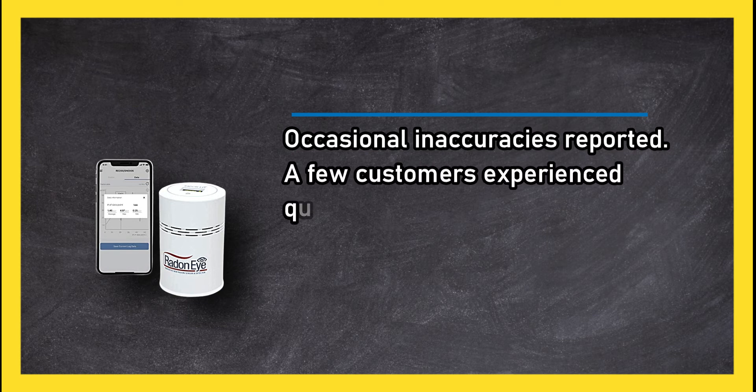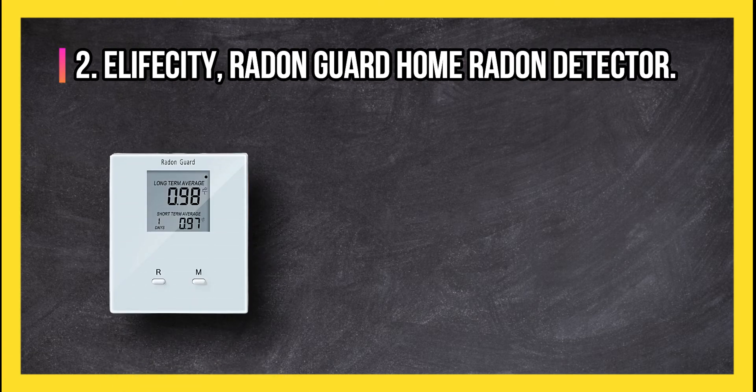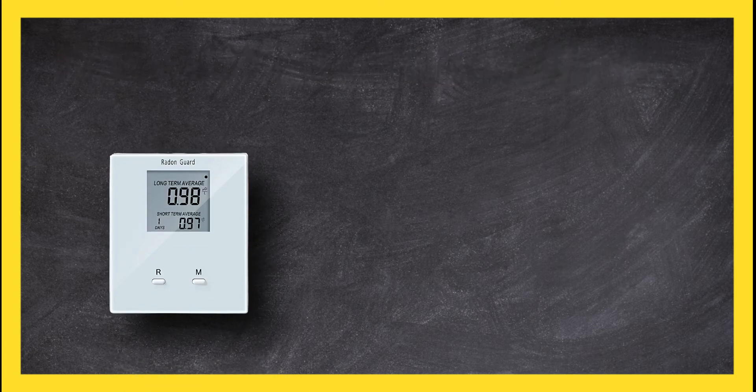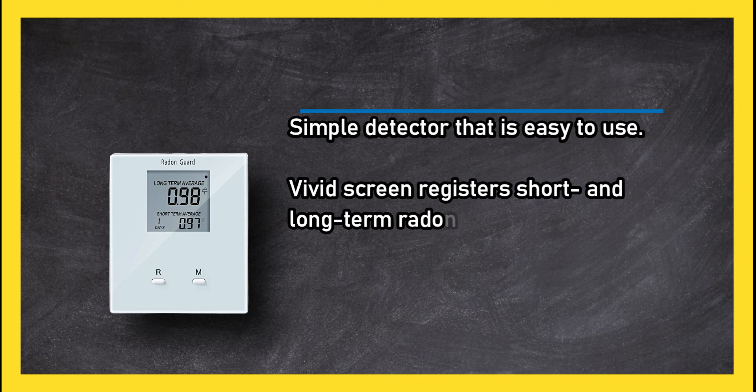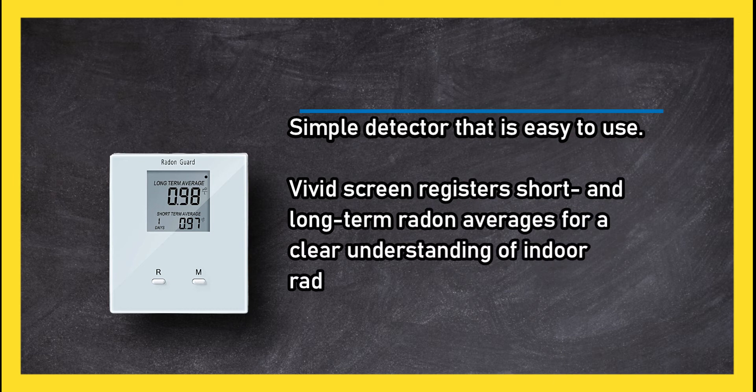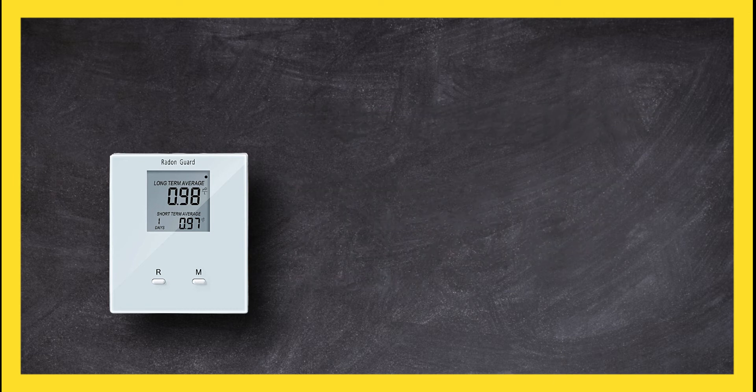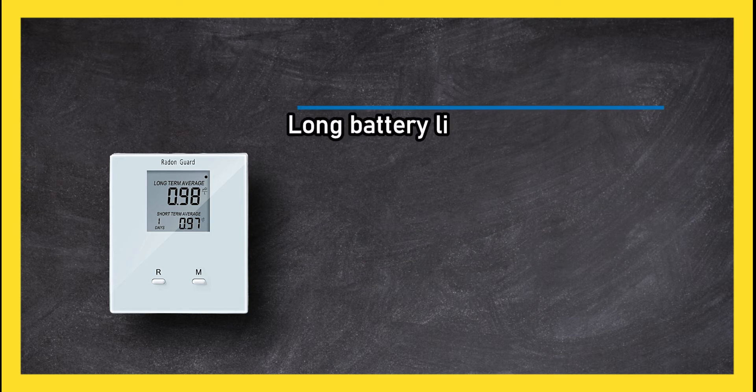At number two: Airthings Radon Guard Home Radon Detector. Simple detector that is easy to use. Vivid screen registers short and long-term radon averages for a clear understanding of indoor radon levels. Long battery life.